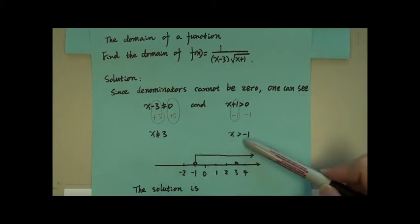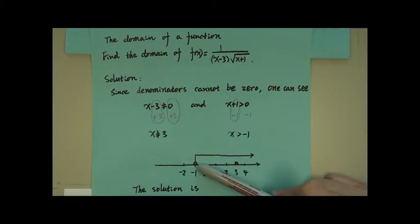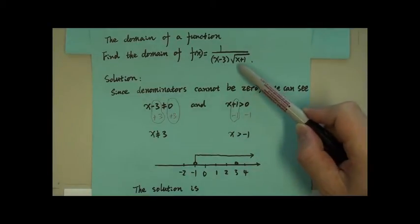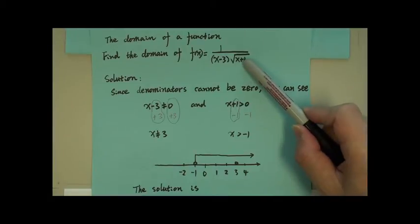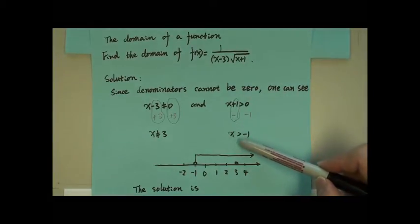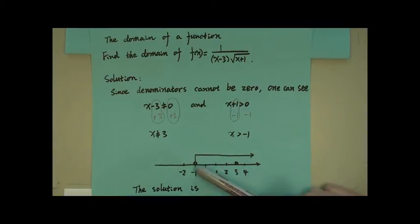So combine those two conditions together. From negative 1, negative 1 is not included. You plug in negative 1 here, negative 1 plus positive 1 is zero, so negative 1 is not included. This circle has to be an empty circle. From this point to the right, it looks okay, but we required that x cannot be 3, so 3 has to be excluded. That means from negative 1 to positive infinity, we have to exclude this 3.